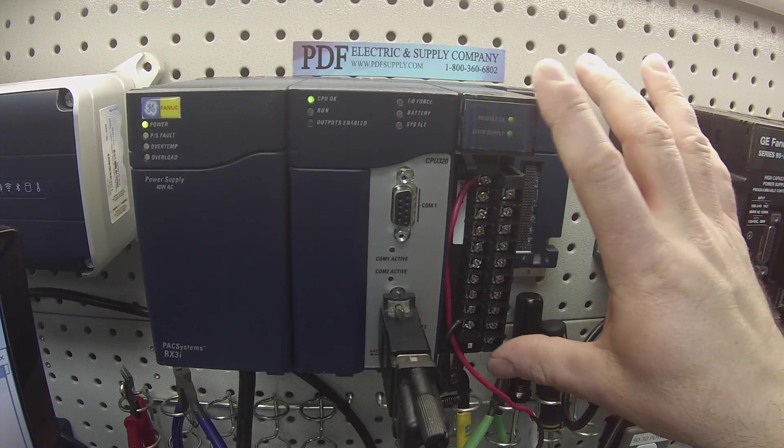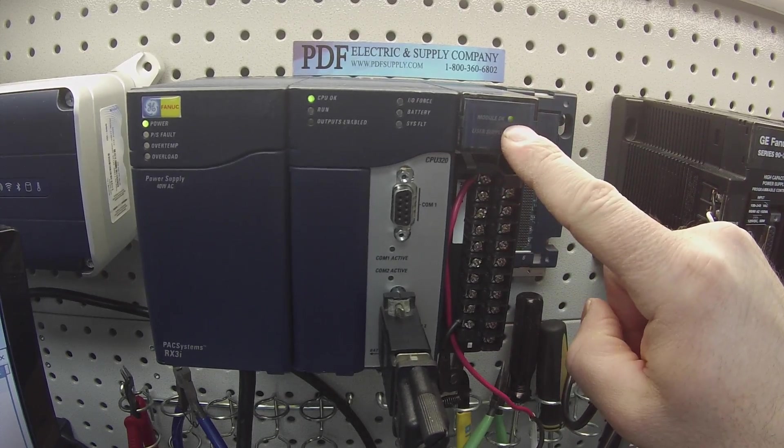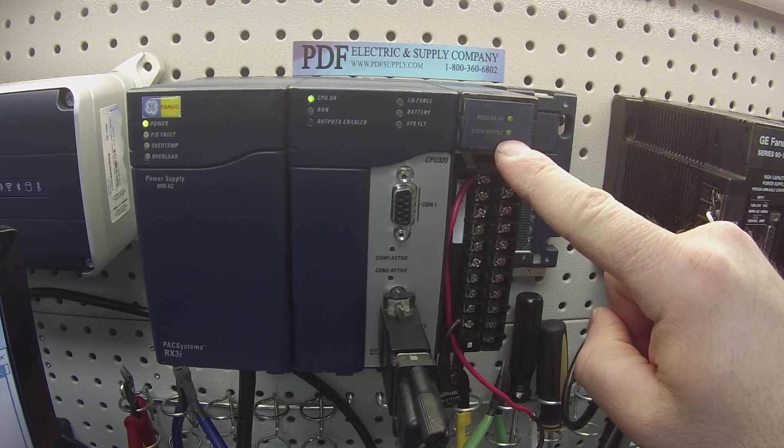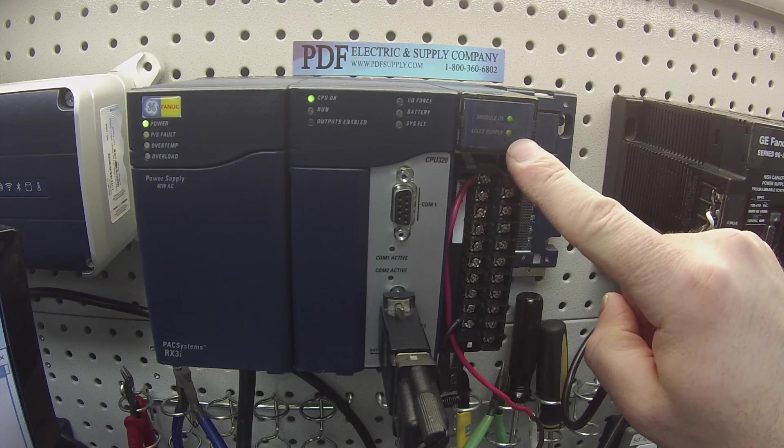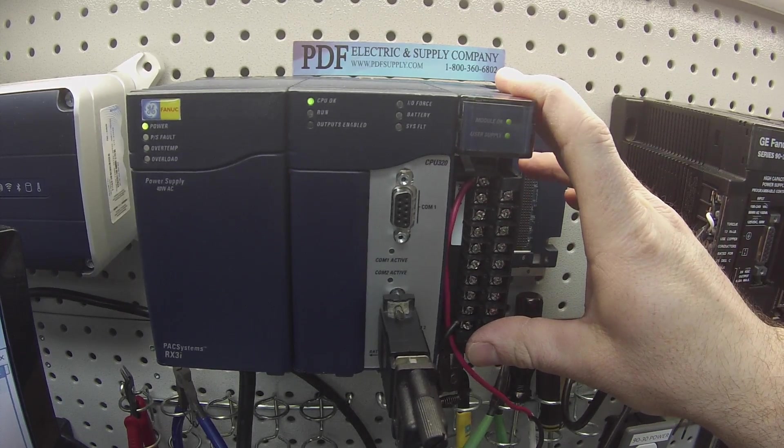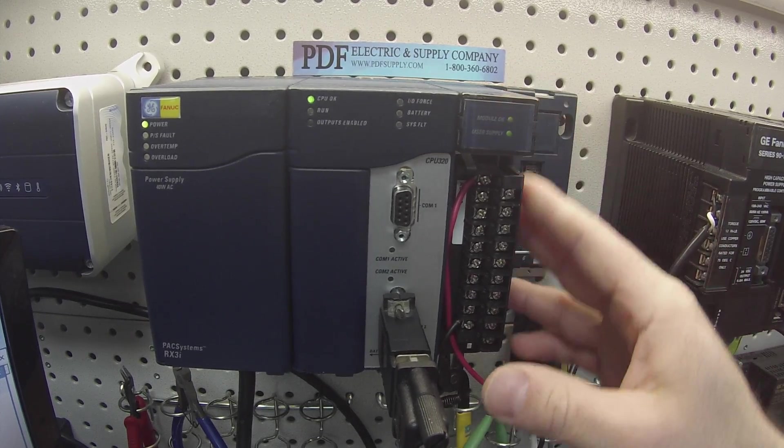A couple quick things. If you guys are using this as a troubleshooting video, if you don't have a module OK blinking green light or you go to power up your user power supply and both of these LEDs are not on or not working, very likely that the analog card is damaged, will need replacement or repair. I'll talk about that later.